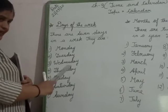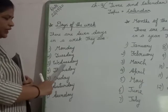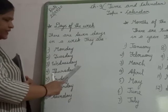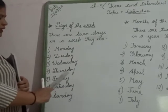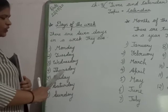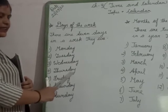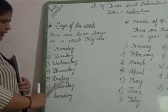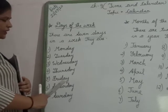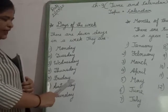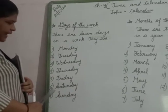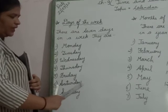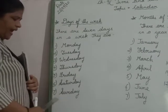Third day, Wednesday, W-E-D-N-E-S-D-A-Y. Wednesday. 4th day, Thursday, T-H-U-R-S-D-A-Y. Thursday. 5th day, Friday, F-R-I-D-A-Y. Friday.